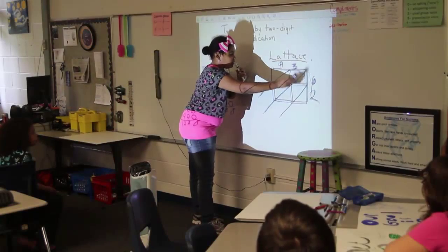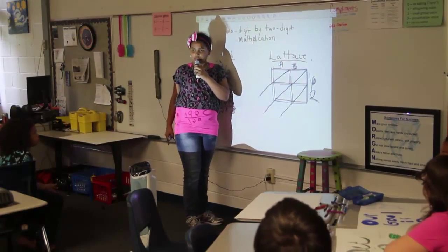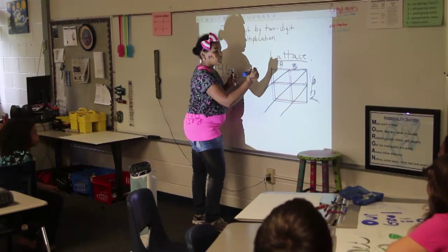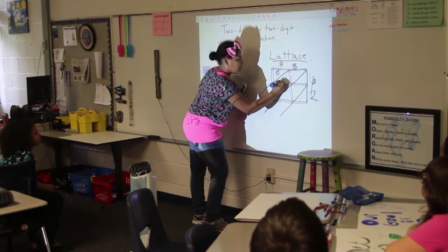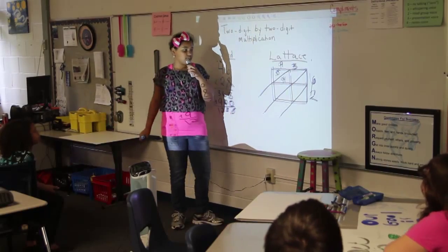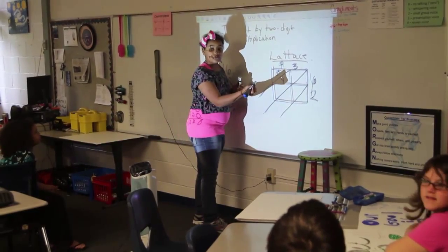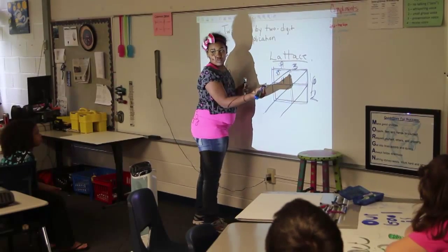What's six times nine? Six times nine? 54. Class? 54. Four. What's six times three? 18. 18. Six times three is? 18.